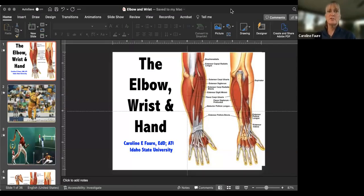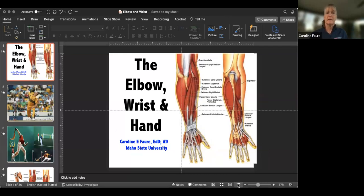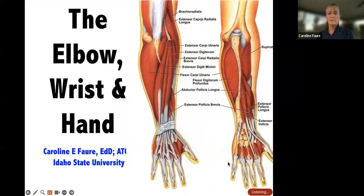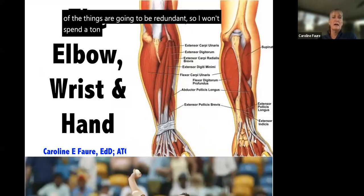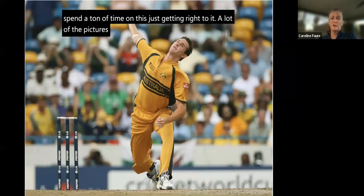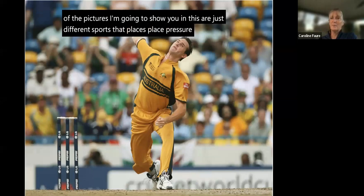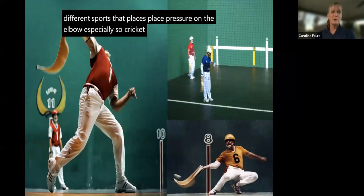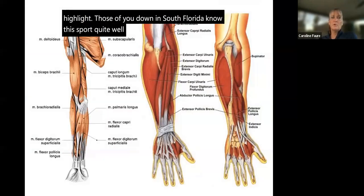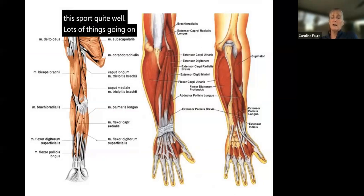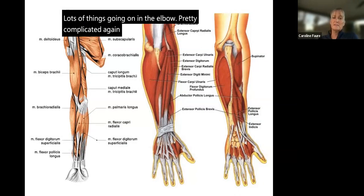Hi everybody, I'm back. This lesson we're going to talk about injuries to the elbow, wrist, and hand. A lot of these things, since we're dealing with soft tissue injuries, are going to be redundant, so I won't spend a ton of time on this. A lot of the pictures I'm going to show are different sports that place pressure on the elbow — cricket, hyali, and others. Lots of things going on in the elbow, and especially when we get to the wrist, it gets much more complicated.